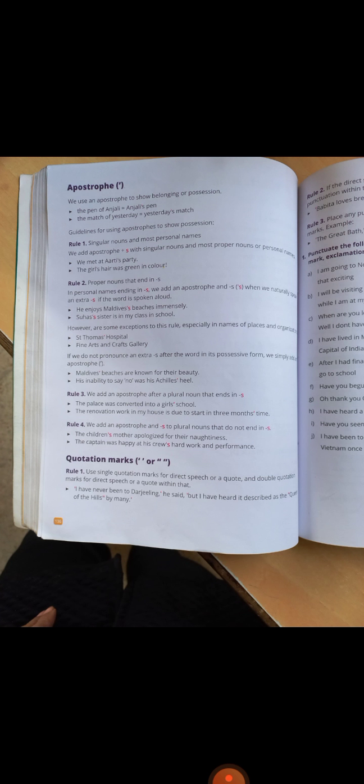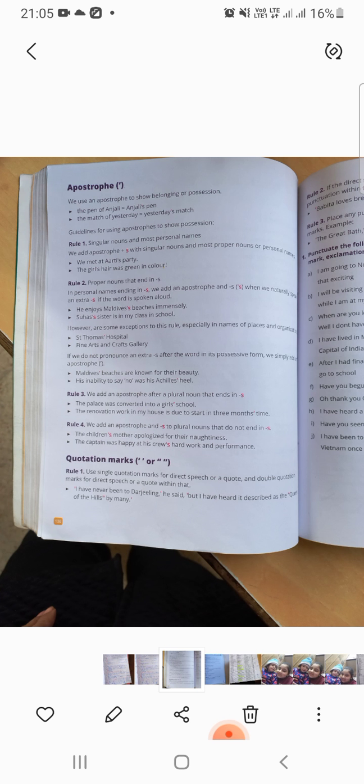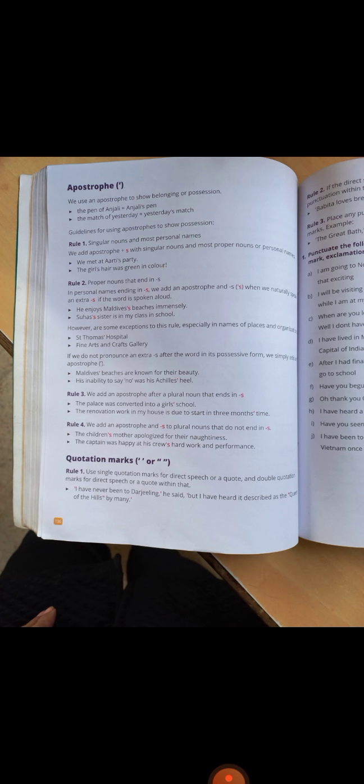One thing which I want to clear - apostrophes are also used to write contractions. For example, do not, its contraction form is don't. So we put apostrophe and make its contraction form. Similarly, I am - I apostrophe m - it is its short form. They are - they apostrophe re.